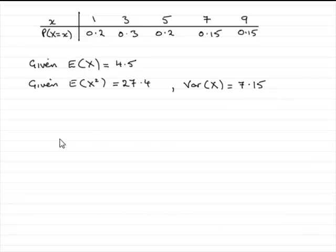But what we've got to do now is work out the expected value of 19 minus 4 times the random variable x.